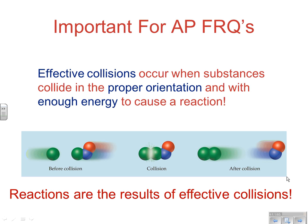Three key ideas here. First: effective collisions. Effective collisions occur when substances collide in the proper orientation and with enough energy to cause a reaction. Reactions are a result of effective collisions, and effective collisions require the right orientation with enough energy. Those three things need to be put together when talking about why reaction rates are increasing or decreasing — it really gets to the fundamental idea behind collision theory and whether a reaction happens at all.